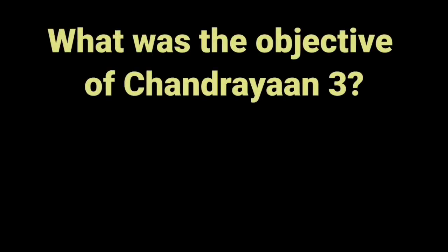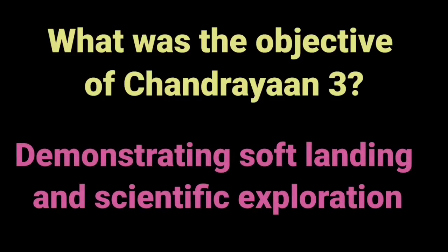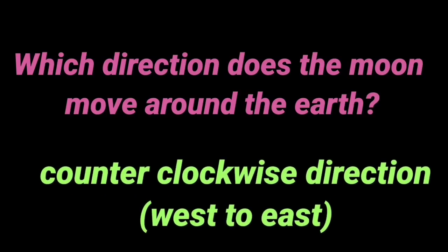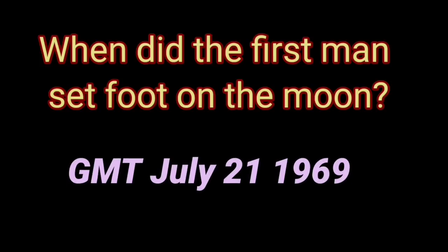What was the objective of Chandrayaan 3? Demonstrating soft landing and scientific exploration. Which direction does the moon move around the earth? Counterclockwise direction, west to east. When did the first man set foot on the moon? GMT July 21st, 1969. When is National Space Day? August 23rd.